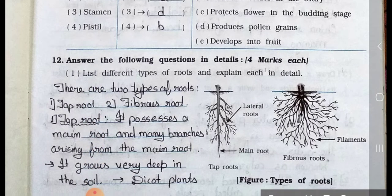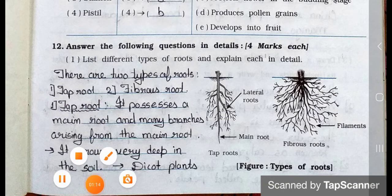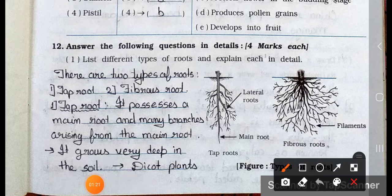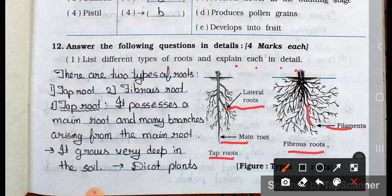Now see the main 12. Answer the following questions in details. It carries 4 marks. Now see the question number 1. List different types of roots and explain each in detail. Now see here it's a tap root. Tap root in that it's a root that goes deep. It's a lateral root. Here it's the main root. And here it's a fibrous root. It's here is the filament. Now see the point answer. There are two types of roots. Tap root and fibrous root.